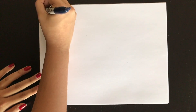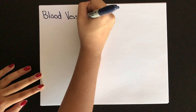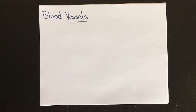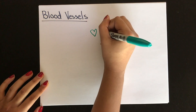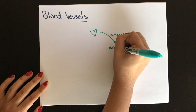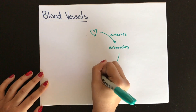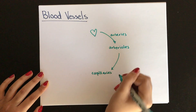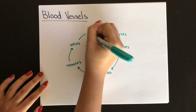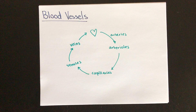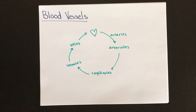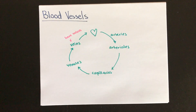Blood vessels are the tubes that carry blood throughout your body, and they have different names based on where they're carrying blood and how big they are. Starting at the heart, blood vessels that carry blood away from the heart are arteries; as they get smaller, they're called arterioles, and then even smaller — capillaries. Capillaries are the smallest blood vessels and allow easy gas exchange of gases and nutrients between blood and organs. As they lead back to the heart, they become venules and then veins. Because most veins defy gravity, they have valves to keep blood moving upward, acting like pockets that catch blood if it falls back.